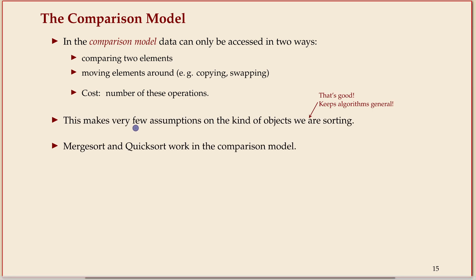So this sounds like a silly machine. We don't have computers that work like this. But for lower bounds that's kind of good. This makes very few assumptions. You can build many different machines that can compare elements and move them around. And for a lower bound that's good because it means the statement we'll get is more general.